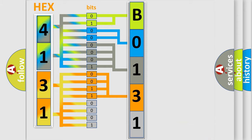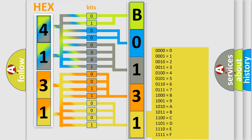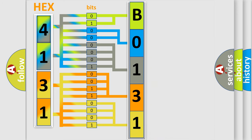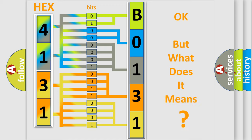A single byte conceals 256 possible combinations. We now know in what way the diagnostic tool translates the received information into a more comprehensible format. The number itself does not make sense to us if we cannot assign information about what it actually expresses.